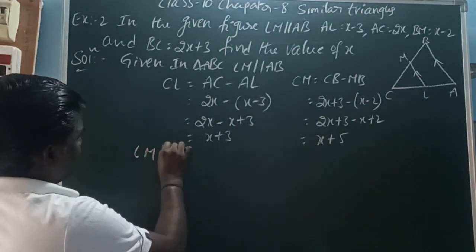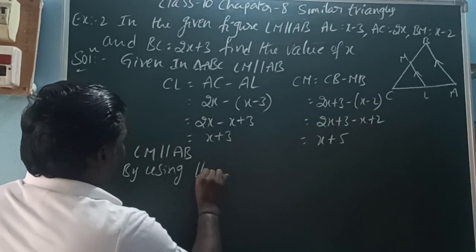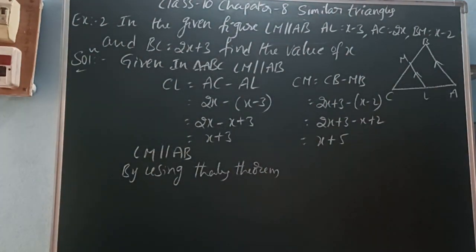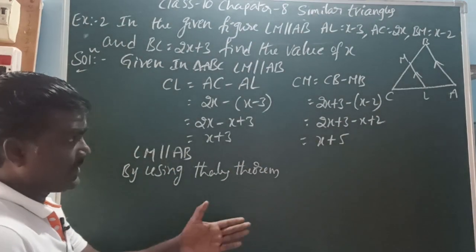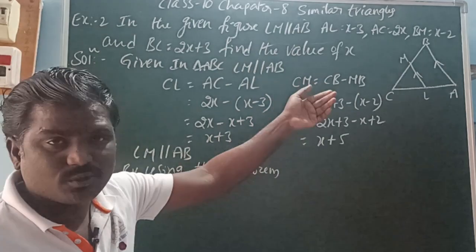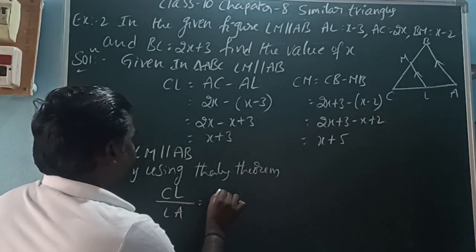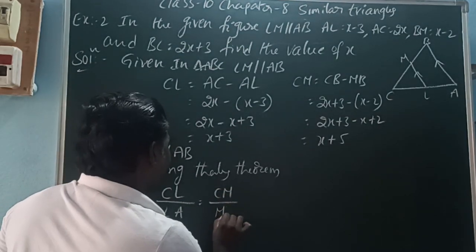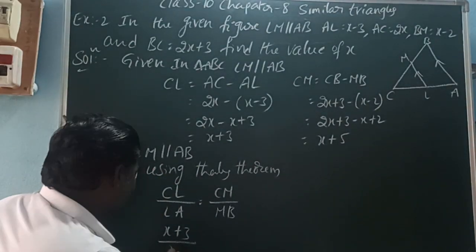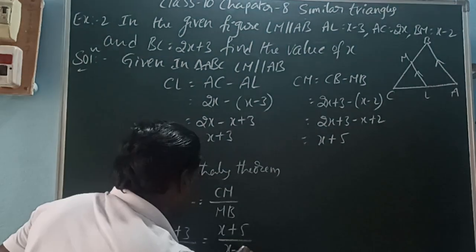Since LM is parallel to AB, by BPT or Thales theorem, when a line is parallel to the third side, the ratios of the divided segments are equal. So CL by LA equals CM by MB. CL is x plus 3, LA is x minus 3, CM is x plus 5, and MB is x minus 2.